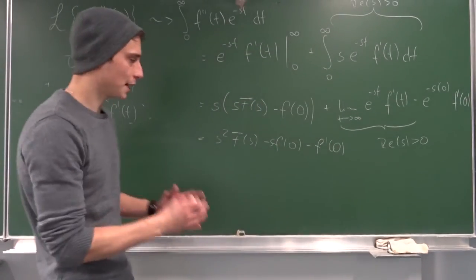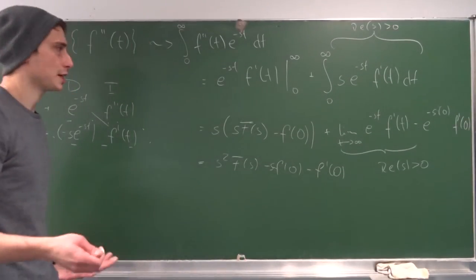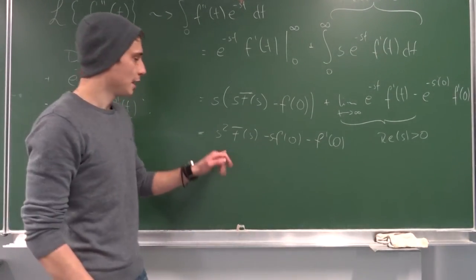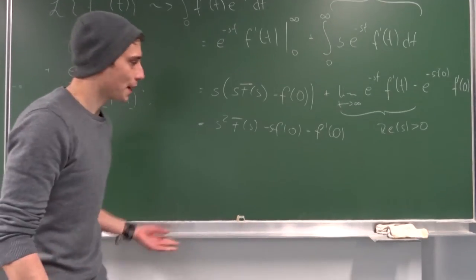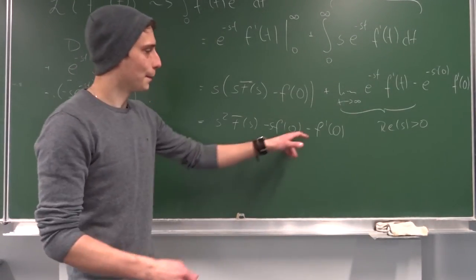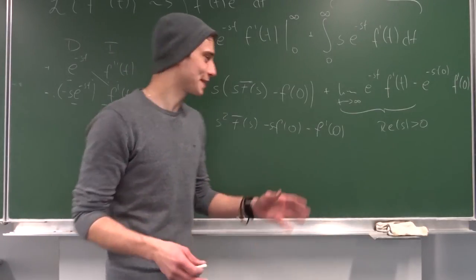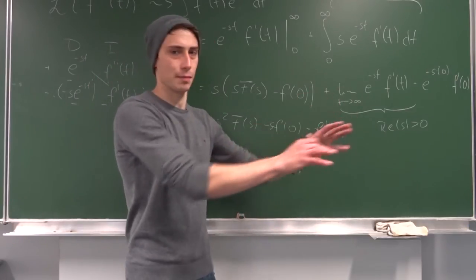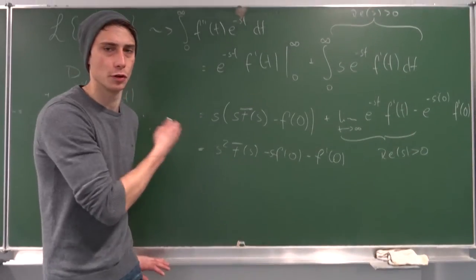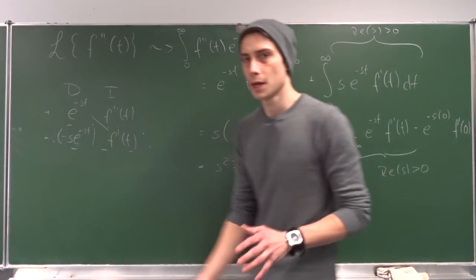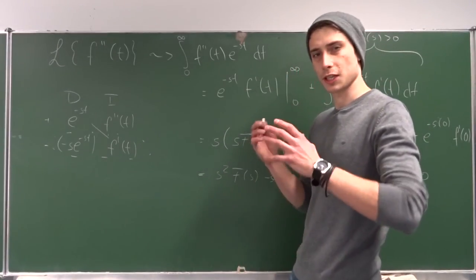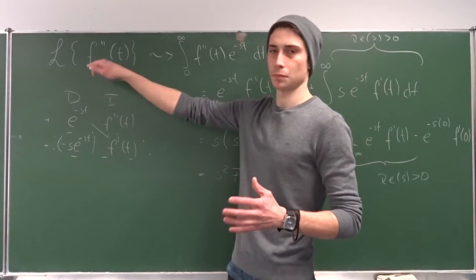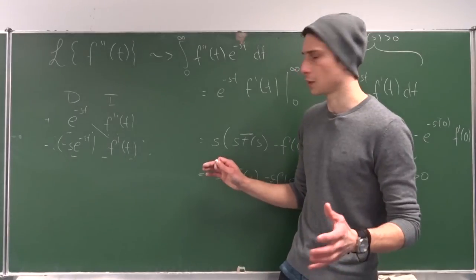Maybe you can see some kind of pattern here. For example, if we took the third derivative of some time-dependent function, you would end up with s to the third power times F(s), minus s squared times f(0), minus s times f'(0), minus f''(0). This pattern continues and you could expand it as much as you want — there's a general formula for this type of Laplace transform. But as mentioned, we are just going to look at the physical side, so you won't need anything more than the second derivative in most cases.